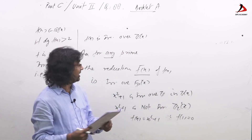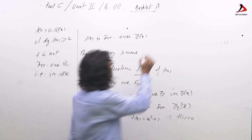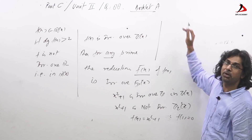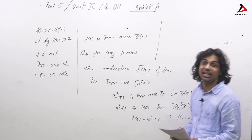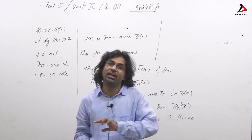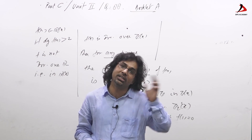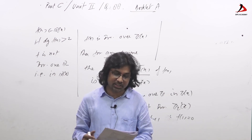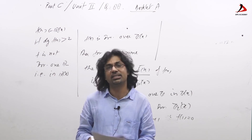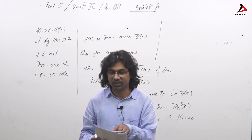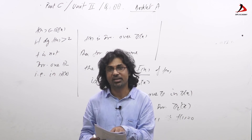Now for options one and two: by Gauss's lemma, there is a result that f(x) belonging to Z[x] is irreducible over Q if and only if it is irreducible over Z. So option one is one direction and option two is the other direction. Therefore, both options one and two are correct.